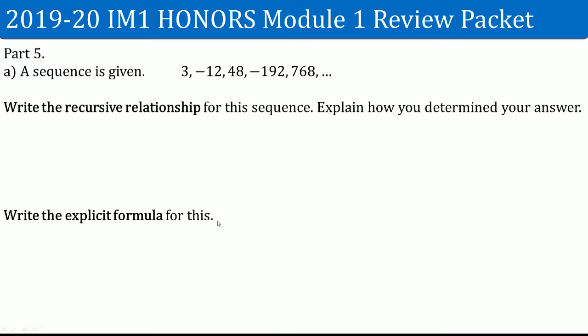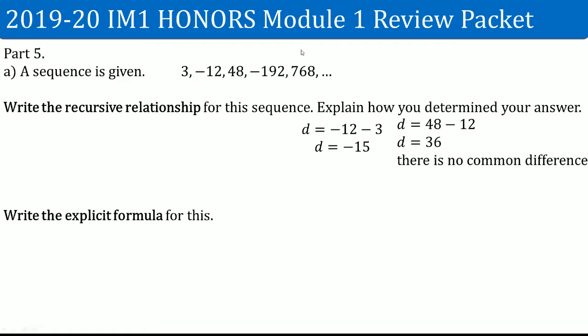The first question asks us to write out the recursive relationship for the sequence and explain how we determined the answer. First, I looked for a common difference. I did the second term minus the first term and got d equals 15. Then I did the third term minus the second term and got d equals 36. So there is no common difference, but I did the calculation to show that.